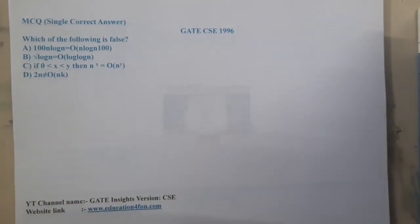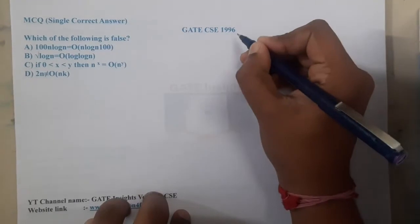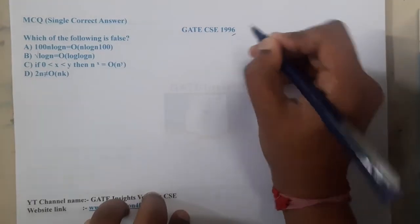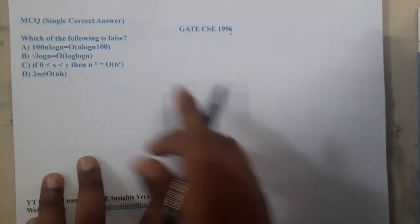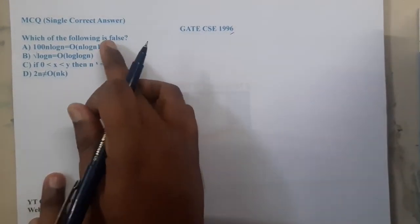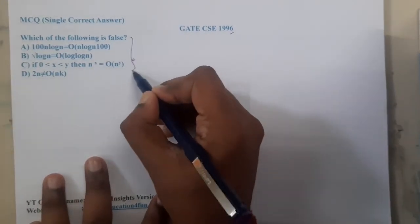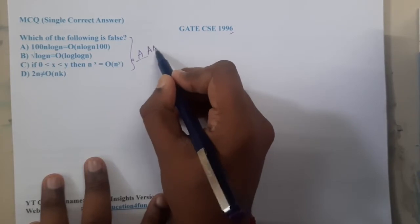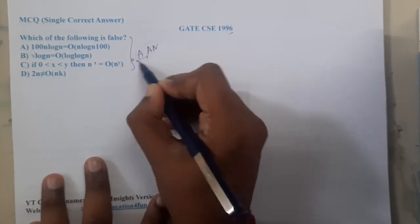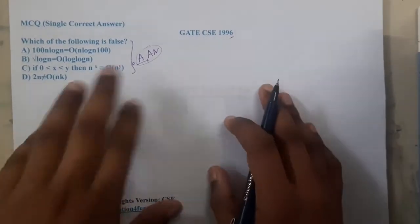Hello guys, we are back with our next question. This question belongs to GATE CSC 1996, and it belongs to algorithms — specifically asymptotic notations.